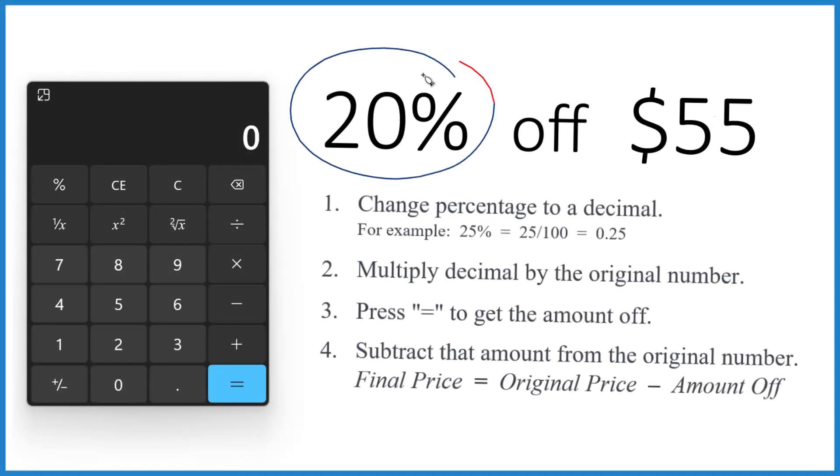If you need to find 20% off of $55, here's how you do it. First thing, change that 20% to a decimal.